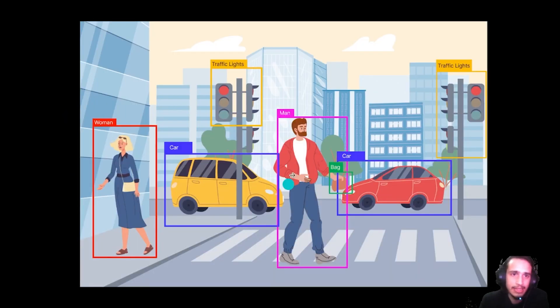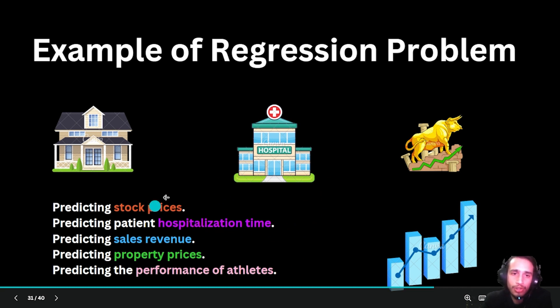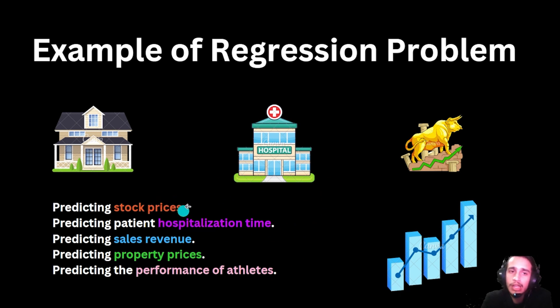Another example of regression is this object detection problem where we detect an object and classify it. The part where it is classified, like this is a car, is a classification problem. The plotting of the box where the object is located is a regression problem. I hope it is clear what is regression and what is classification from this example.